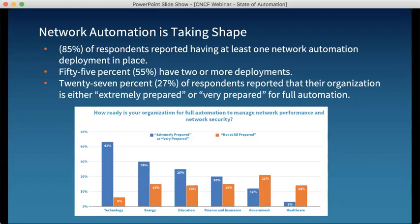When we look back at last year's survey with the same question, only 15% of respondents felt their organization was prepared for automation — so we've had a huge increase. Looking at specific industry results, the energy sector is really ahead at 30% — very prepared or fully prepared for full automation. We think the energy sector leads because their industry is more hands-off in many network management processes due to the distributed nature of their environments.